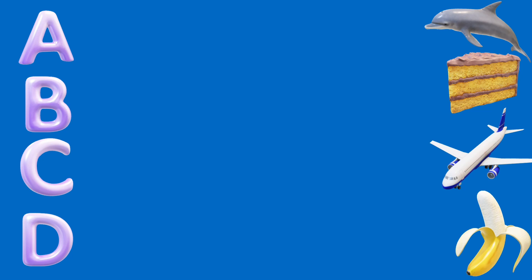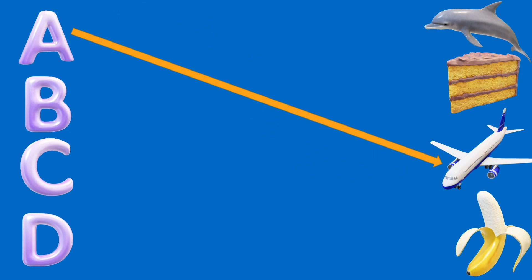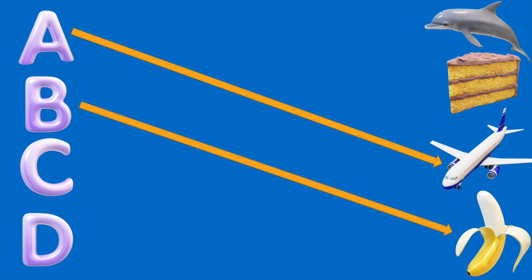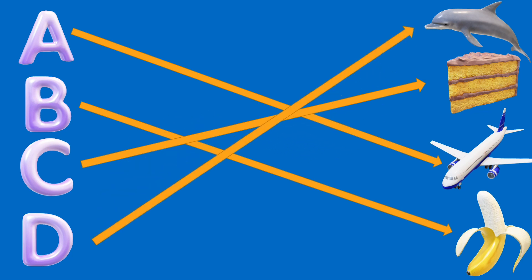Here you have 5 seconds to guess. Here we go. A is for aeroplane. B is for banana. C is for cake. And D is for dolphin.